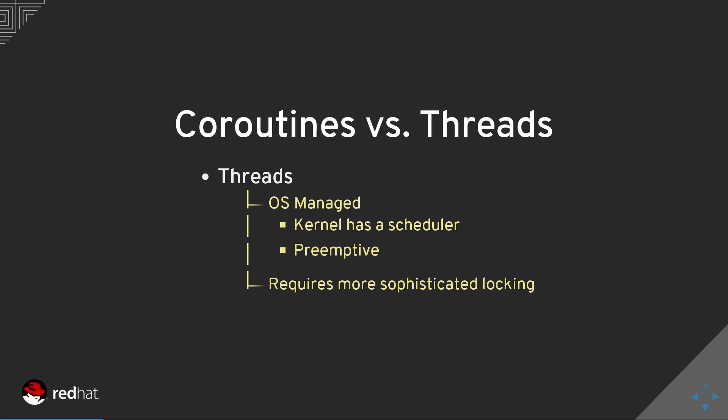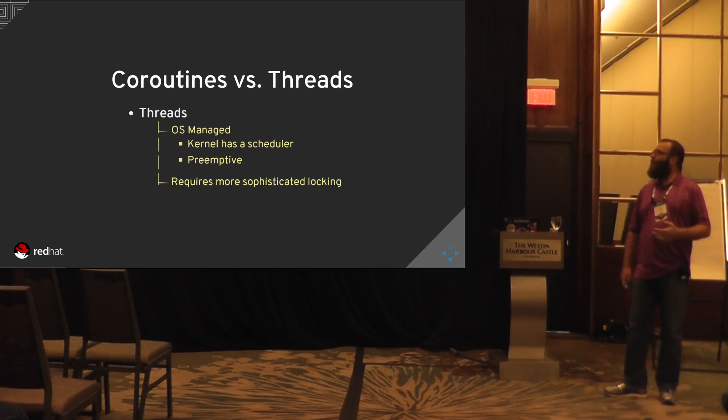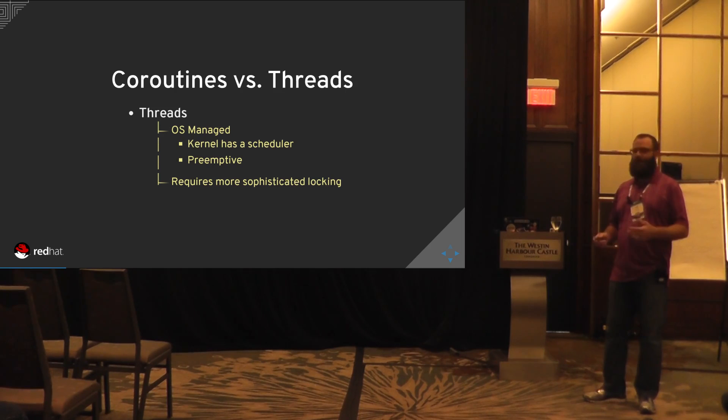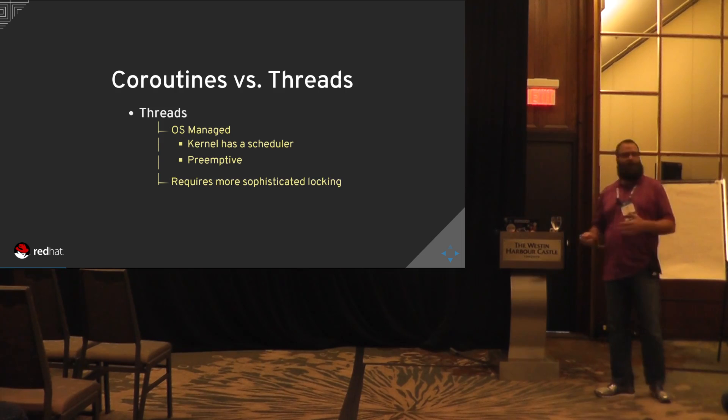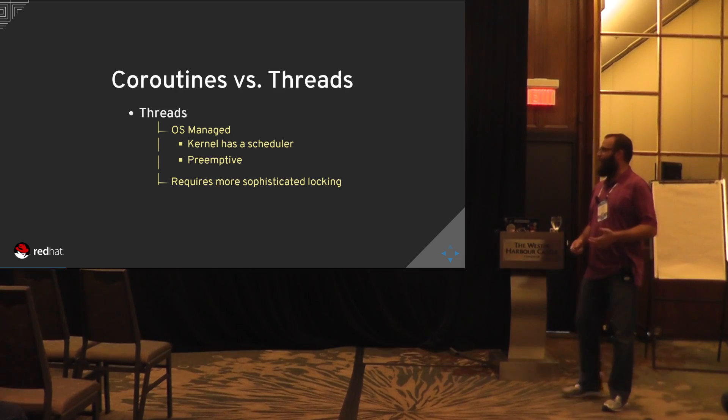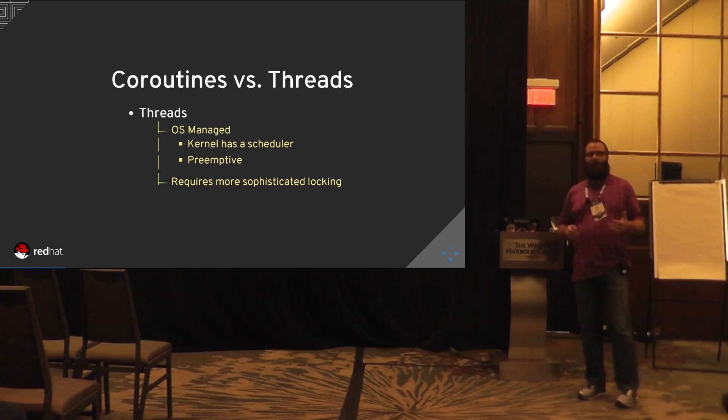Comparing that against threads, which obviously allows us to do a similar thing — threads are managed typically by the OS. The kernel has a scheduler that will run and schedule your thread, make sure it gets adequate time, and will preempt other running threads. This requires a bit more sophisticated locking, particularly if you're spawning a lot of IO-heavy threads that are constantly accessing common resources.